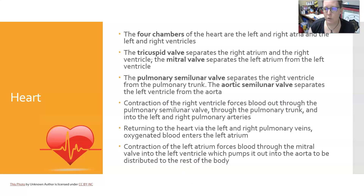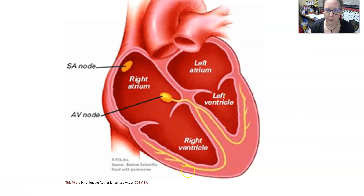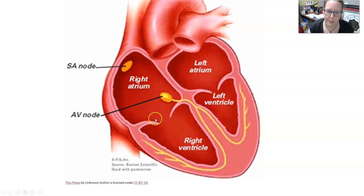Contraction of the right ventricle forces blood out through the pulmonary semilunar valve, through the pulmonary trunk, and into the right and left pulmonary arteries to the lungs, where it picks up oxygen. That blood returns to the heart via the left and right pulmonary veins, entering the left atrium. Contraction of the left atrium forces blood through the mitral valve into the left ventricle, which pumps it out to the aorta to be distributed to the rest of the body.